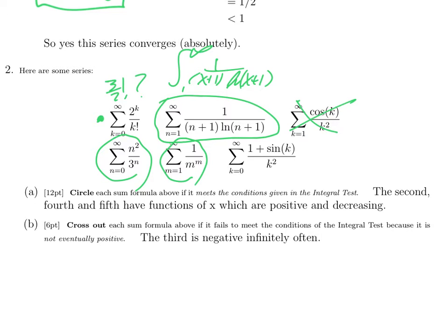This last one, 1 plus sin k over k squared, you can of course replace it with 1 plus sin x over x squared. It is essentially always positive. Every once in a while you get 0. But it is certainly not decreasing. So it keeps, it's always positive except where it hits 0. So it looks like that. Infinitely many wobbles.